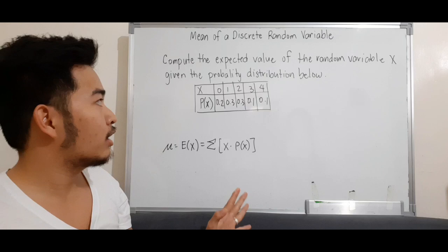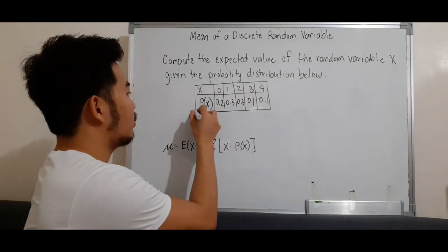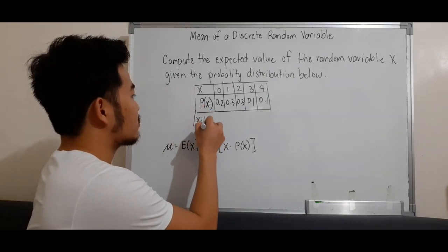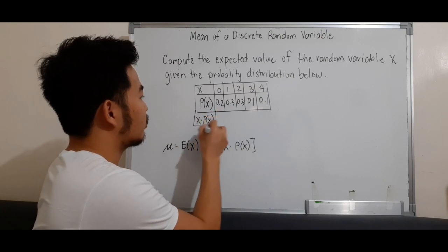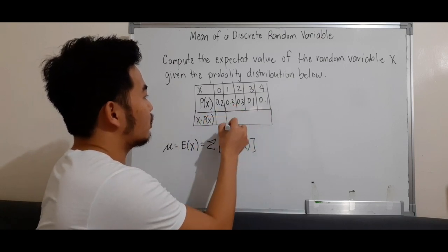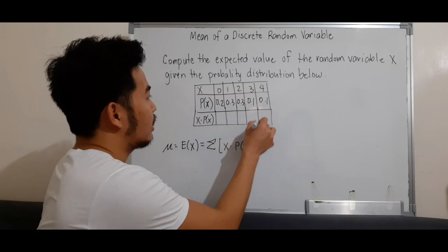So we'll create a row for x times the probability of x. We'll just extend the table, then multiply these values.